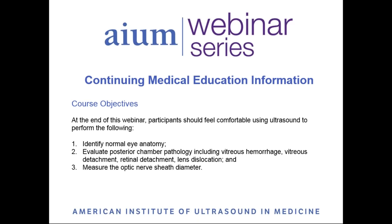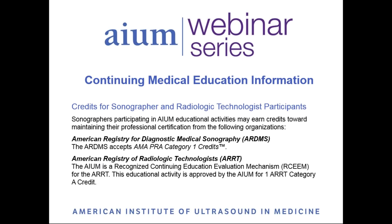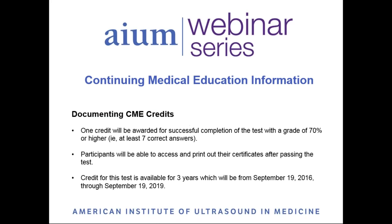At the end of this webinar, participants should feel comfortable using ultrasound to identify normal eye anatomy, to evaluate posterior chamber pathology, and to measure the optic nerve sheath diameter. This webinar is designated for one AMA PRA Category 1 credit, approved for physicians, sonographers, and radiologic technologists. Participants who complete the post-test with a grade of 70% or higher will be awarded one CME credit.